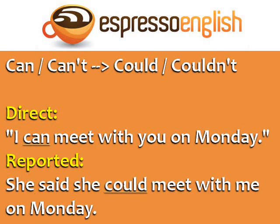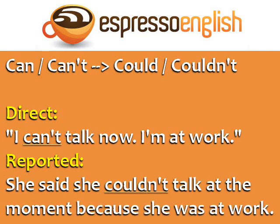Statements with can and can't become could and couldn't when they are reported speech. Direct: 'I can meet with you on Monday.' Reported: She said she could meet with me on Monday. Direct: 'I can't talk now. I'm at work.' Reported: She said she couldn't talk at the moment because she was at work.